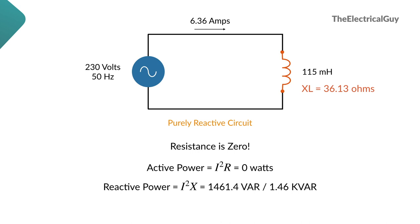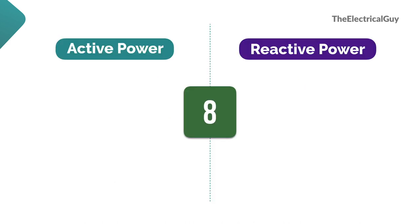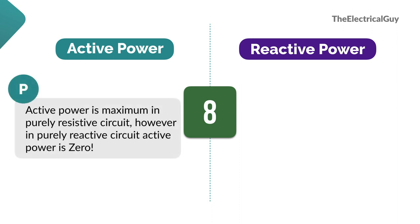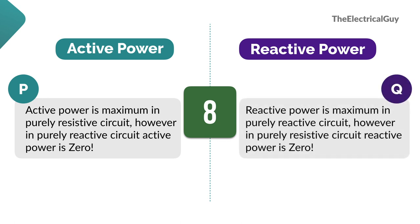The word 'purely' is very important here. Active power is maximum in a purely resistive circuit but is 0 in a purely reactive circuit. Similarly, reactive power is maximum in a purely reactive circuit but is 0 in a purely resistive circuit. Most importantly, one power cannot be converted into the other — you cannot convert active power into reactive or reactive power into active. Both powers are treated as separate quantities, and both place a burden on the transmission line that carries them.